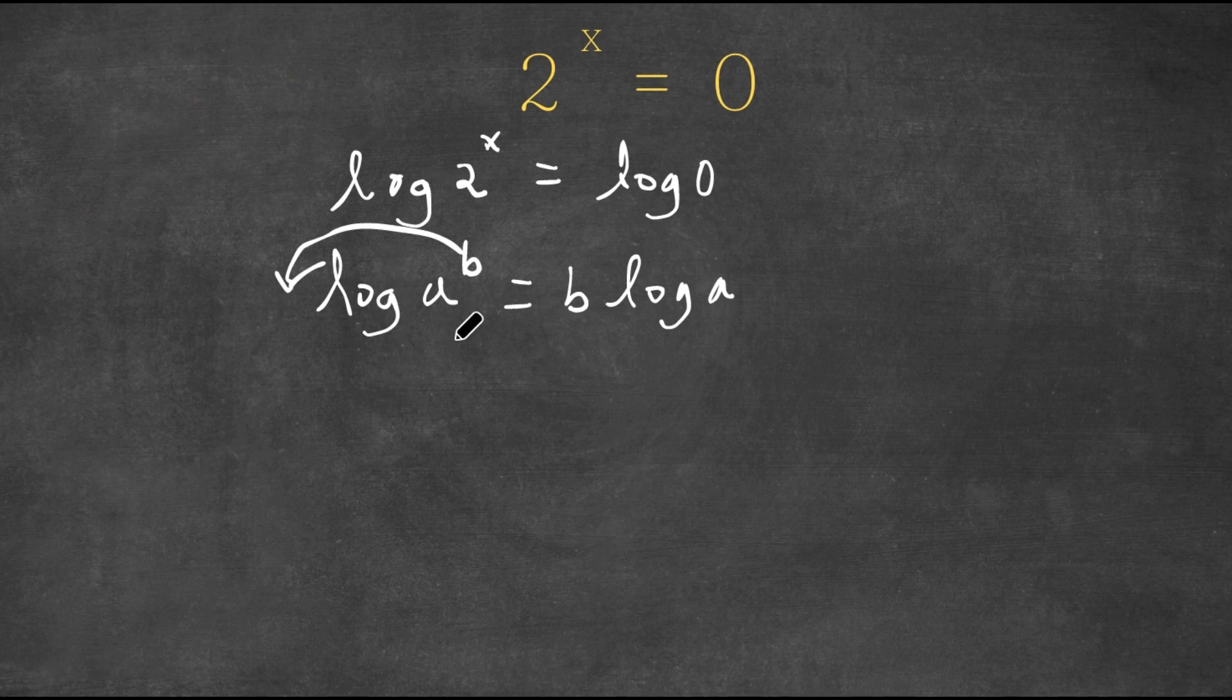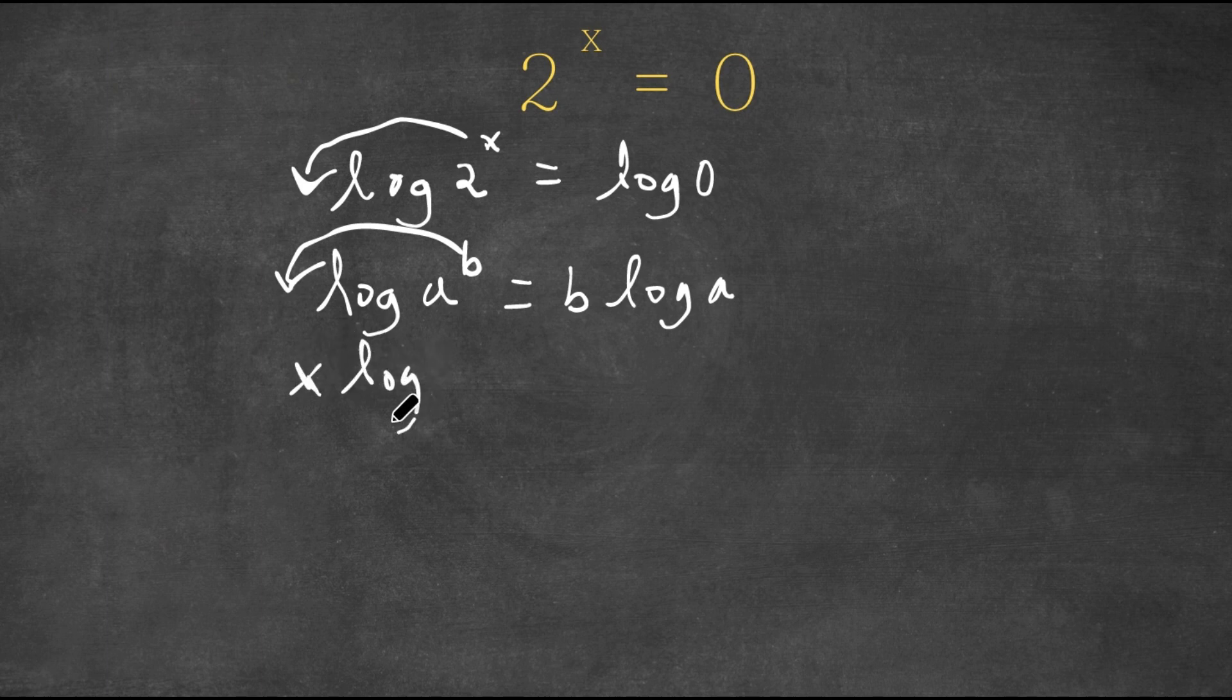This is an important property of logarithms, and I'm going to use it on log 2 to the power of x. I'm going to move this x to the front of the logarithm, so now I have x times log 2 equals log 0.